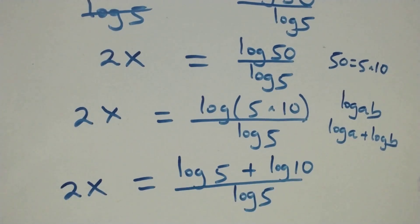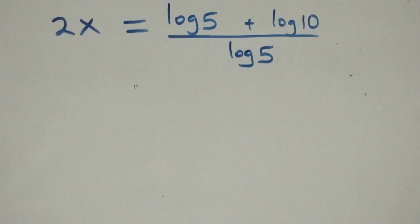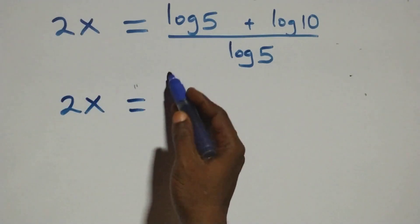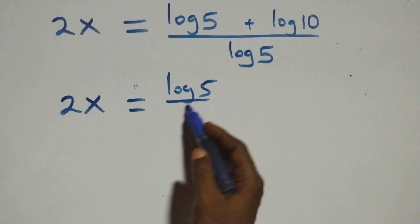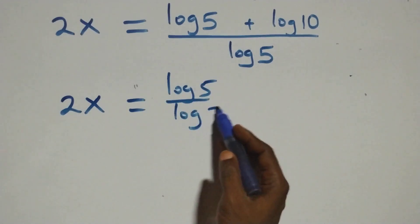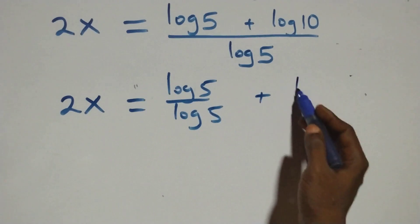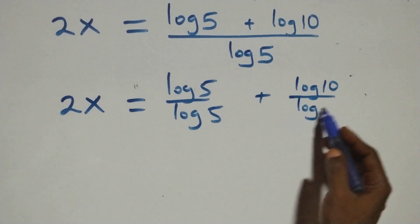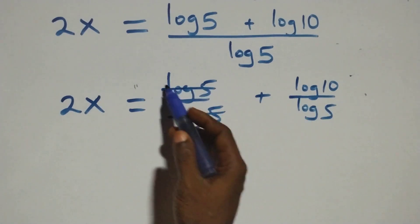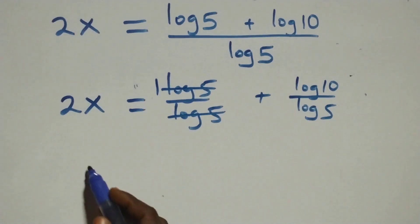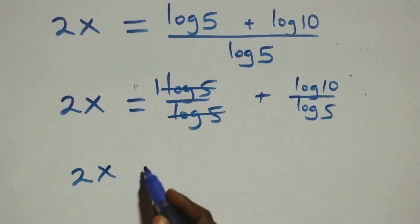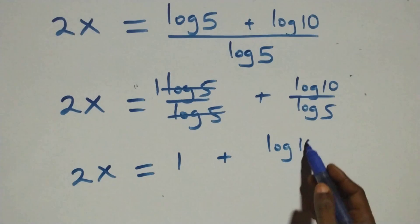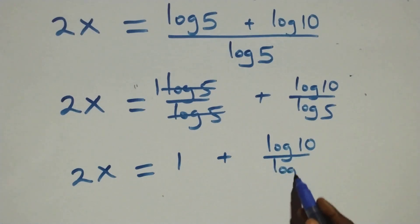Next step: we separate this into two fractions. We have 2x equals log 5 over log 5, plus log 10 over log 5. Here log 5 cancels each other giving 1, so 2x equals 1 plus log 10 over log 5.